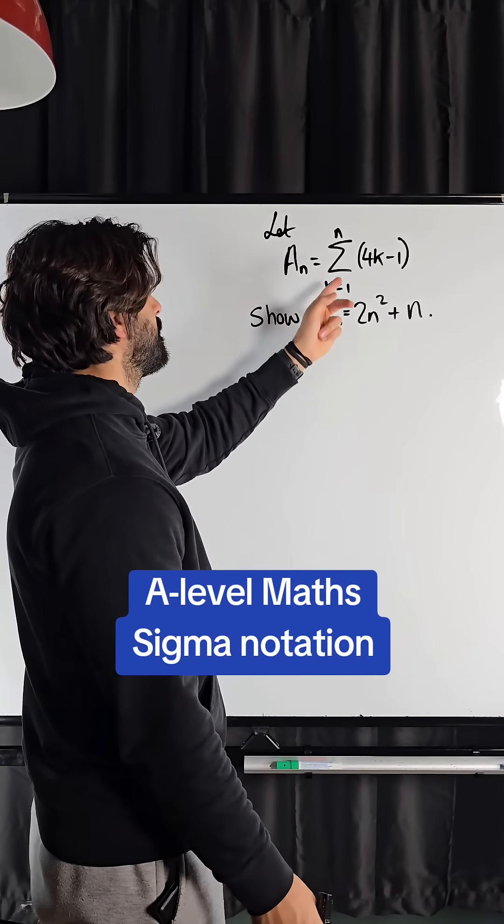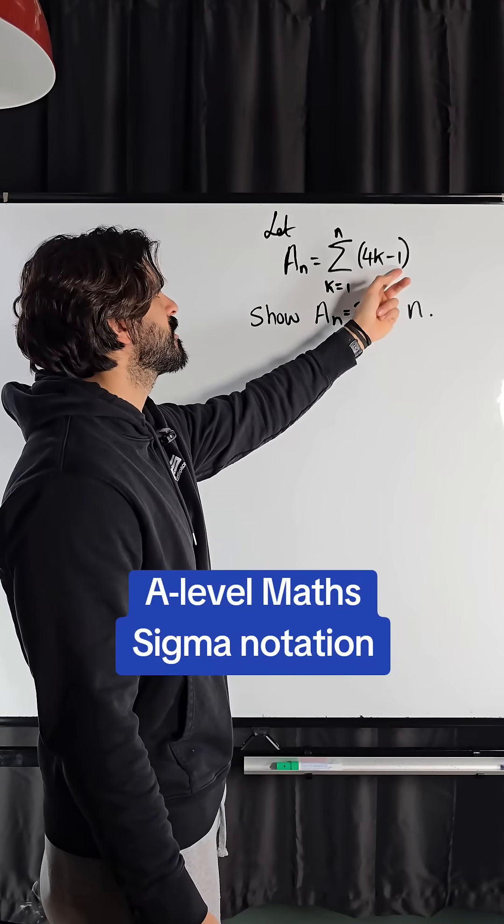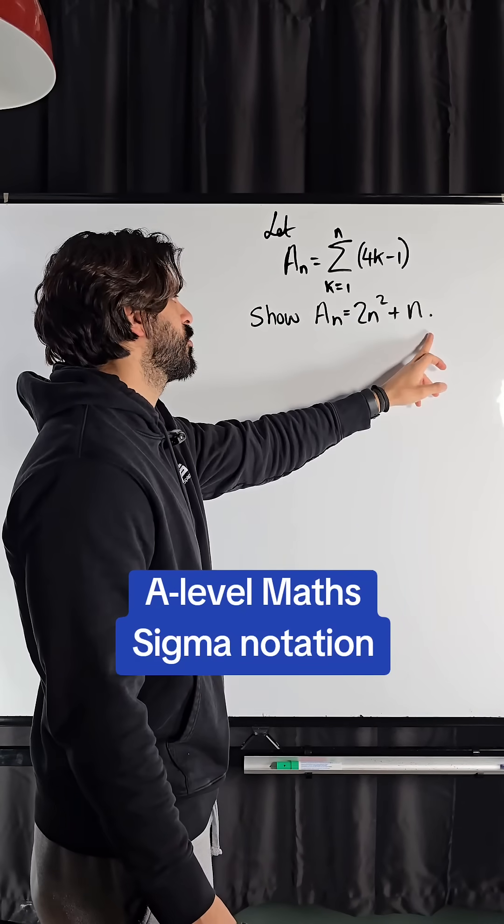Let A_n equal the sum from k equals 1, so the first term to the nth term of this sequence 4k minus 1. Show that A_n is equal to this quadratic.